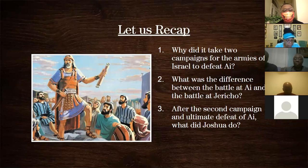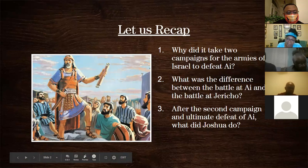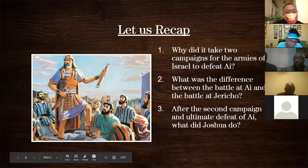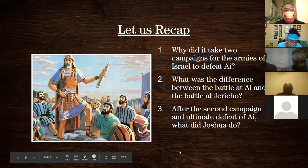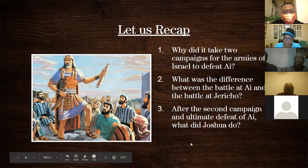Lastly, after the second campaign and the ultimate defeat of Ai, what did Joshua do? He built an altar and then he read from the Law of Moses. He gave God the credit for the battle, turning the people's minds from the defeat to what God had done and is doing for them. So that gets our mindset back into the study.